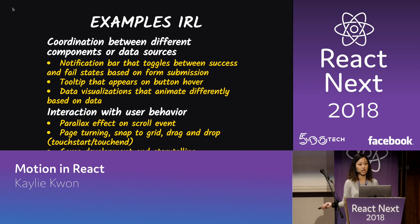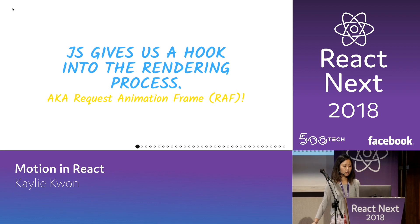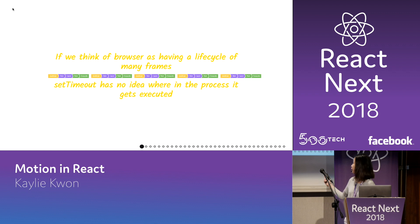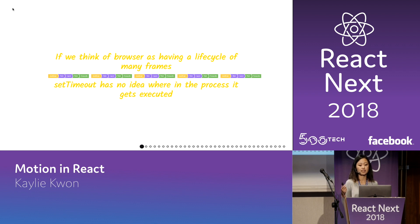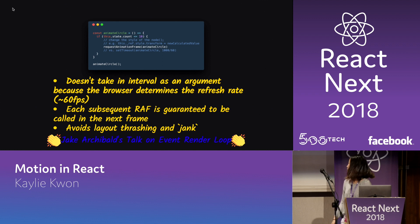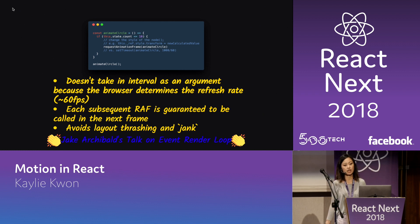You could even do something complex like game development and storytelling. The benefit of JavaScript is that it gives us a hook into the rendering process known as requestAnimationFrame. If you think of the browser as having a life cycle of many frames, setTimeout has no idea where in the process it gets executed. But requestAnimationFrame lets the browser figure out the best refresh rate — so on Chrome, when your tab is inactive, your animation will run slower. Because each subsequent requestAnimationFrame is guaranteed to be synchronized with your frames, it always gets called at the same place, which helps you avoid layout thrashing and what's known as jank.